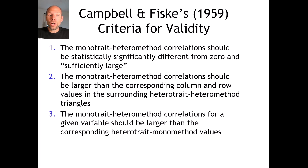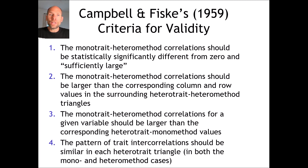The third criterion states that the mono-trait heteromethod correlations for a given variable should be larger than the corresponding hetero-trait mono-method values. The fourth criterion is that the pattern of trait intercorrelations should be similar in each hetero-trait triangle in both the mono- and hetero-method cases. Let's walk through these criteria one by one based on an example and see how they can be applied.